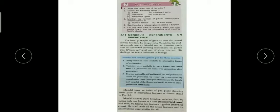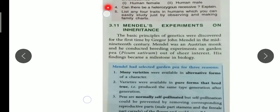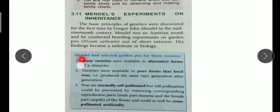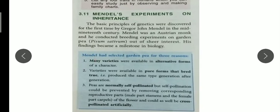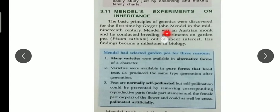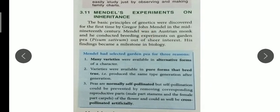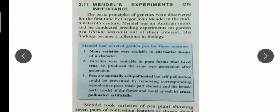Good morning students, I hope you all are fit and fine. Today I am going to explain the experiment that Mendel conducted on the pea plant. Mendel was an Austrian monk who conducted several hybridization experiments on the garden pea, whose scientific name is Pisum sativum. His experiments have become a milestone in biology.